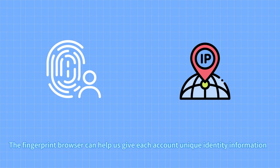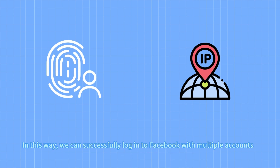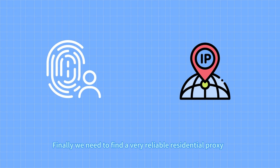The fingerprint browser can help us give each account unique identity information. By configuring a proxy, it can make each account appear to come from a different region. In this way, we can successfully log into Facebook with multiple accounts.